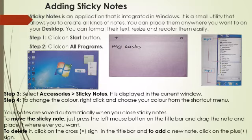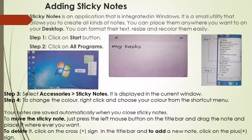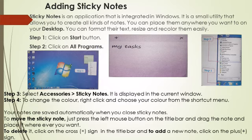Now let us learn about adding Sticky Notes. Sticky Notes is an application integrated in Windows. It is a small utility that allows you to create all kinds of notes and place them anywhere you want on your desktop. You can format the text, resize and recolor them easily. Click on the Start button, then click on All Programs, then select Accessories, then Sticky Notes. To change the color, right click and choose your color from the shortcut menu. Your notes are saved automatically when you close Sticky Notes. To move a sticky note, press the left mouse button on the title bar and drag the note wherever you want. To delete it, click on the cross sign in the title bar. To add a new note, click on the plus sign.